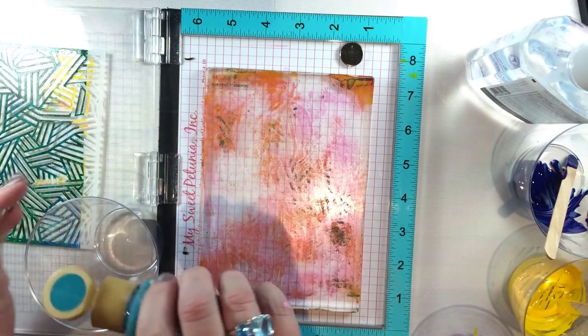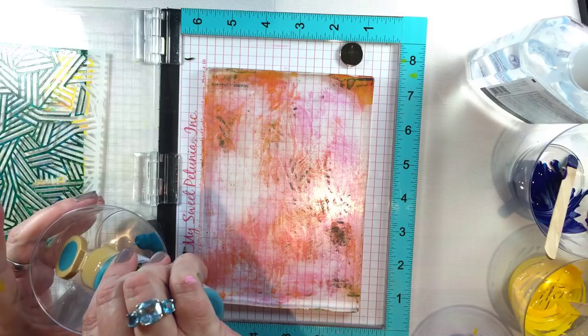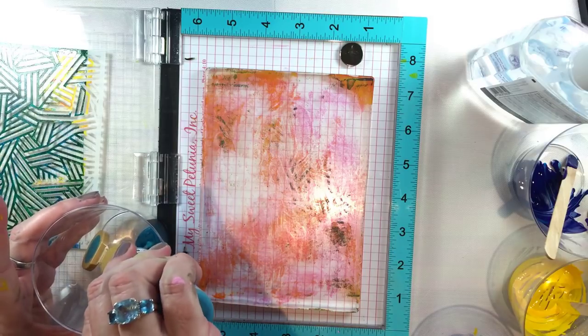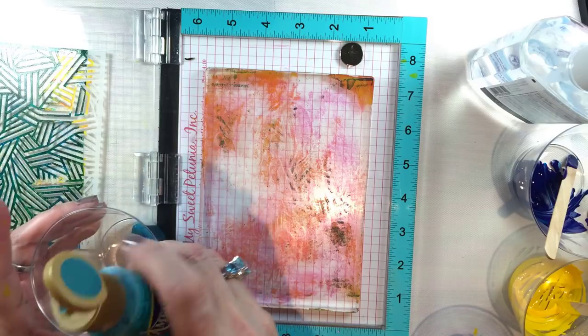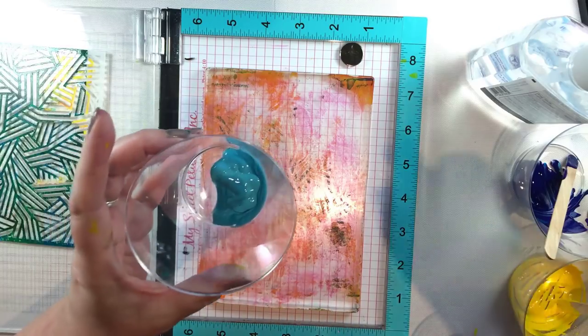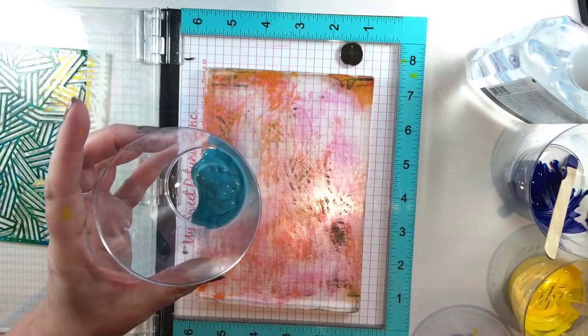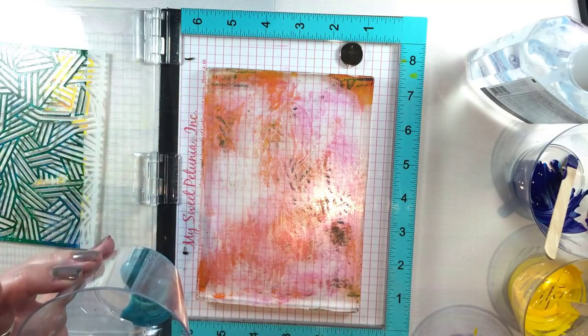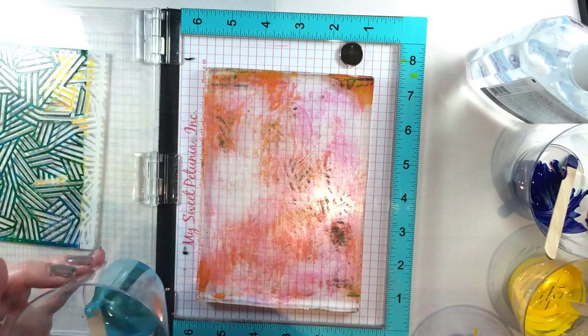I have my 5x7 gel press set up in my MISTI. This is really the way I like to work with my gel press for a lot of reasons, and I have some little plastic cups with paint that I'm actually putting hair oil in. I'm not even kidding you a little bit!